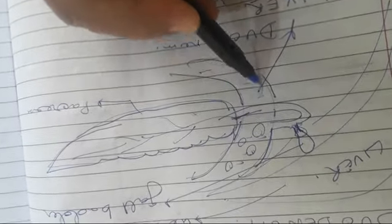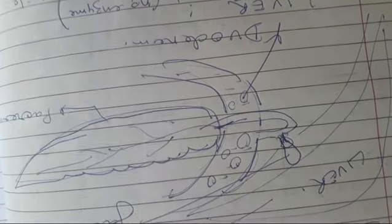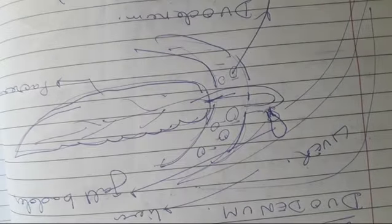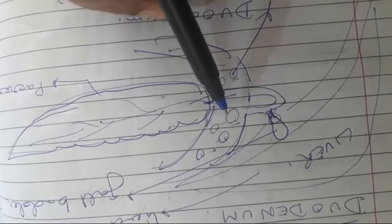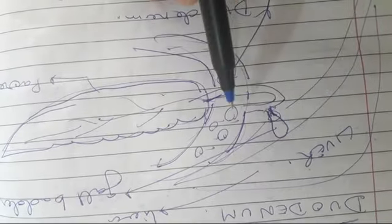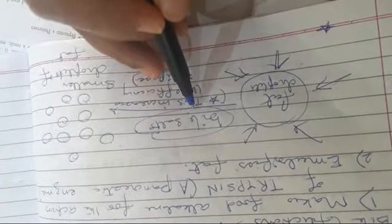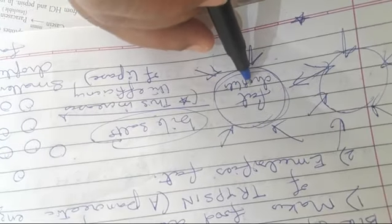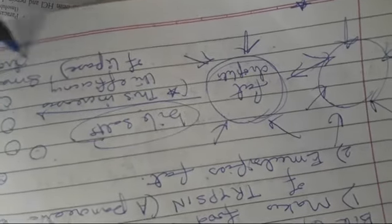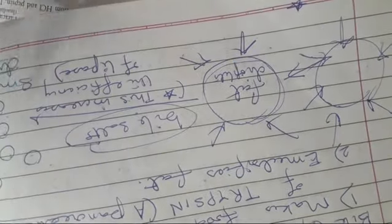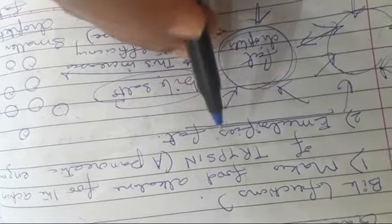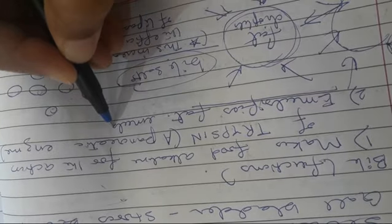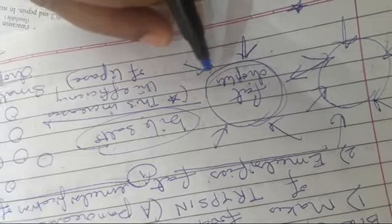The fat droplets in the partially digested food are large and have not been digested yet. Bile contains bile salts, which act upon these large fat droplets and break them into smaller droplets of fat. This process of breaking large droplets of fat into smaller droplets is called emulsification of fat.